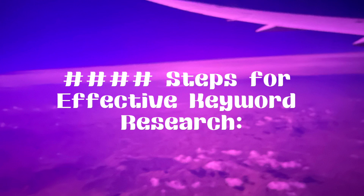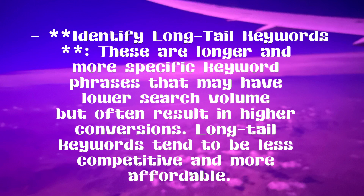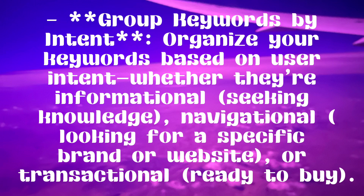Steps for effective keyword research: Start broad then narrow down — use tools like Google's Keyword Planner or SEMrush to find broad keywords related to your business, then gradually narrow them down based on search volume and competition. Identify long-tail keywords — these are longer and more specific keyword phrases that may have lower search volume but often result in higher conversions; long-tail keywords tend to be less competitive and more affordable. Group keywords by intent — organize your keywords based on user intent: informational (seeking knowledge), navigational (looking for a specific brand or website), or transactional (ready to buy).